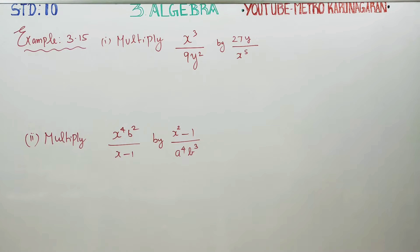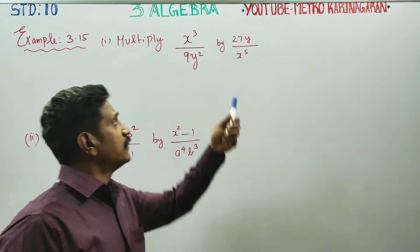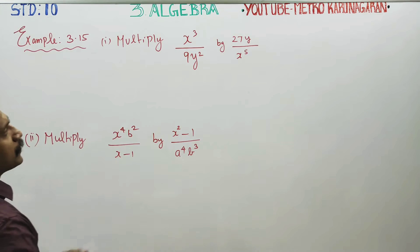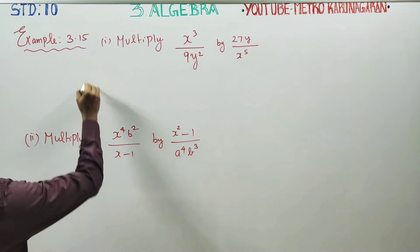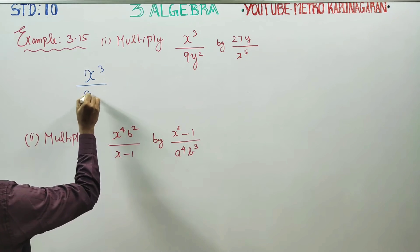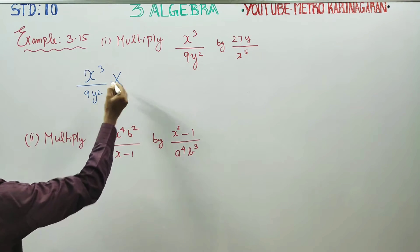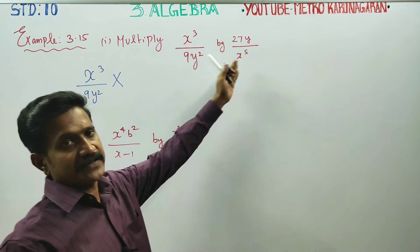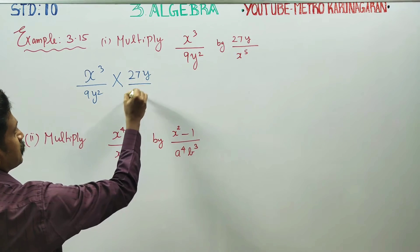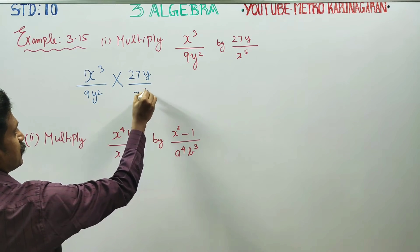Dear 10th standard students, in example 3.15, you have to multiply this rational expression with this rational expression. We have x power 3 by 9y square, multiplied by 27y by x power 5.